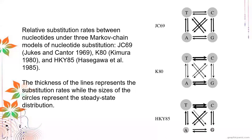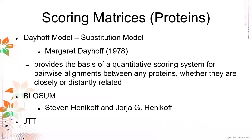That covers nucleotides. For proteins, it's much more complicated because we have 20 amino acids to account for, and most of them also have similarities in biochemical properties. We must be able to account for that in our scoring matrices — how we score the matches, mismatches, and the relationships between them.